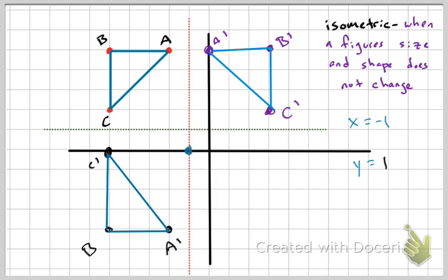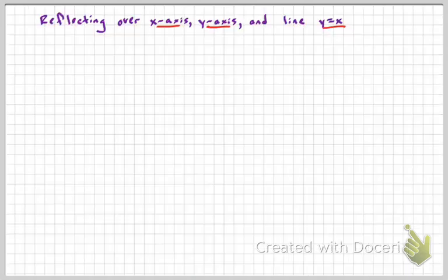Now there are some rules you can follow. Normally with horizontal and vertical lines it's easiest to count, but there are rules for the X axis, Y axis, the line Y equals X, and also the line Y equals negative X.